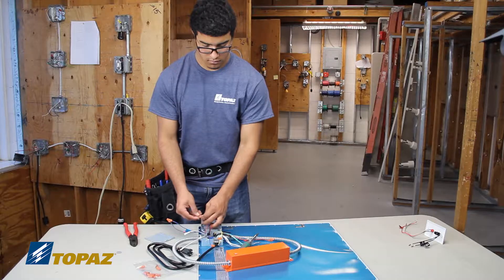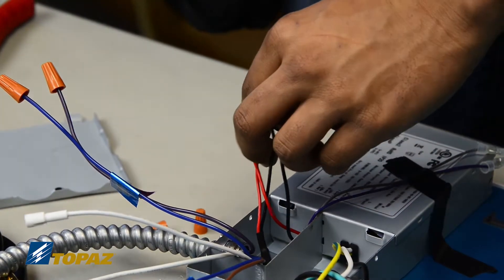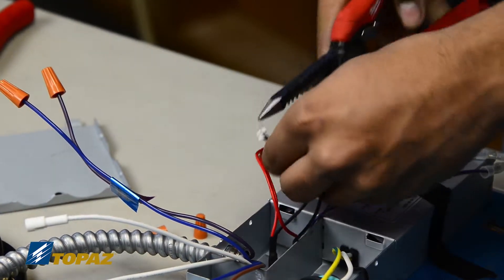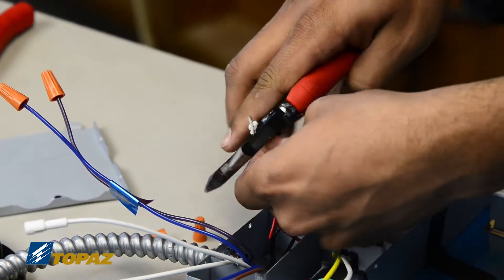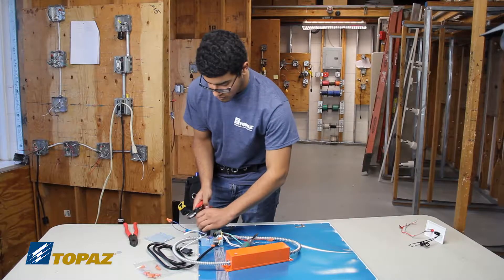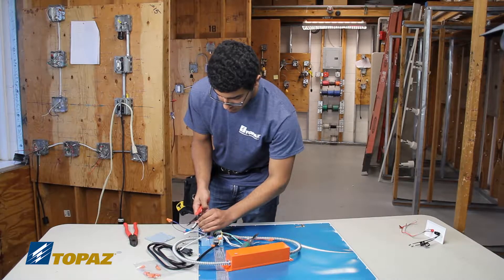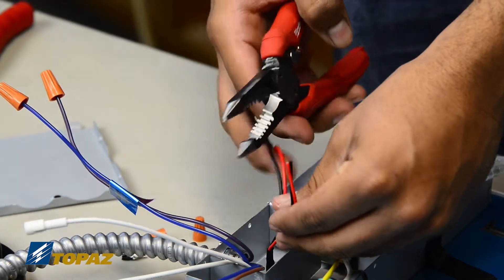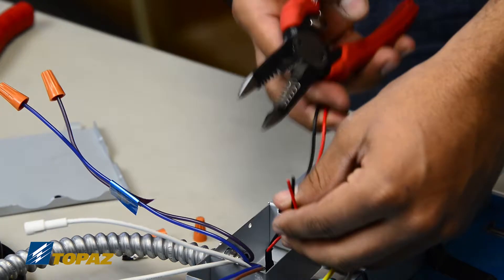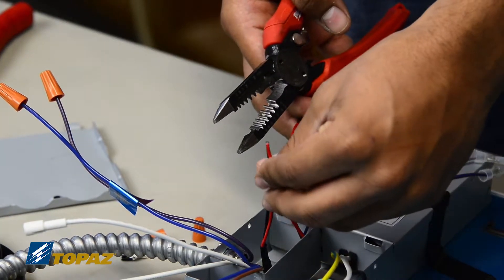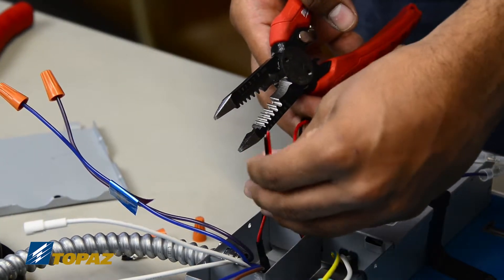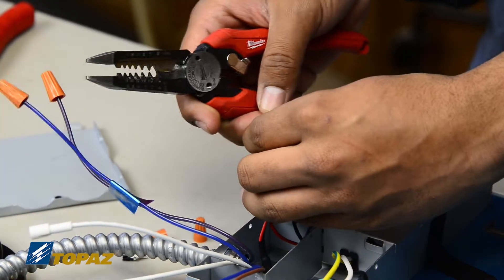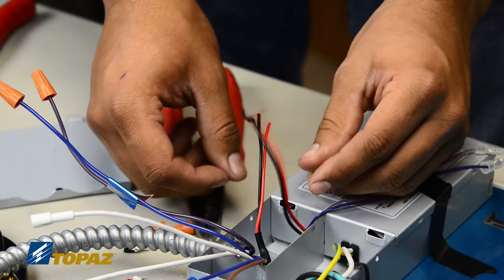Starting with the class 2 compartment, we're going to go ahead and separate the leads by removing the wire nuts. We're going to cut the ends off and restrip the wires. Now that we've separated them we can easily see the two leads that go to the driver, black and red, and the two leads that go directly to the LED array.